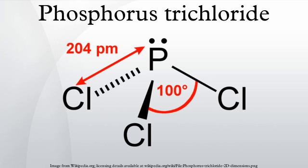Chemical properties: the phosphorus in PCl3 is often considered to have the +3 oxidation state, and the chlorine atoms are considered to be in the -1 oxidation state. Most of its reactivity is consistent with this description.